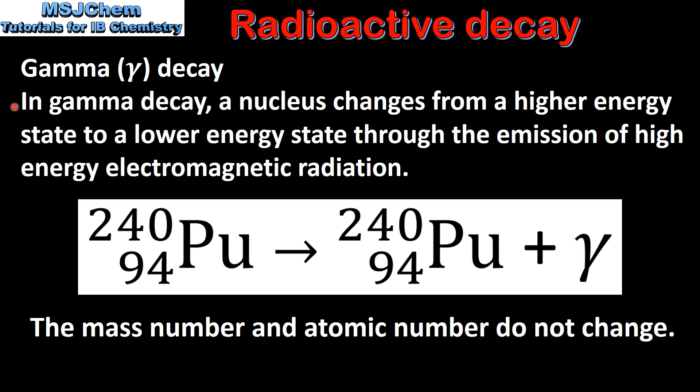In gamma decay a nucleus changes from a higher energy state to a lower energy state through the emission of high energy electromagnetic radiation. In this nuclear equation we have the gamma decay of plutonium-240 and as we can see the mass number and atomic number do not change.